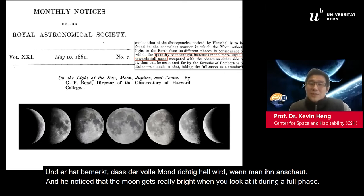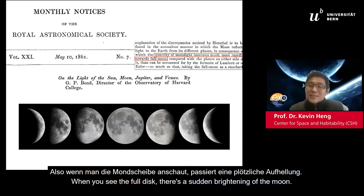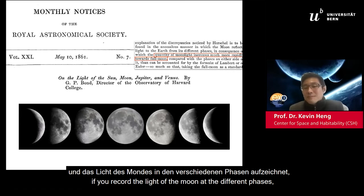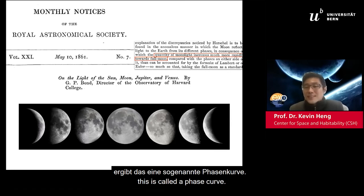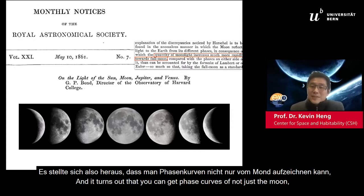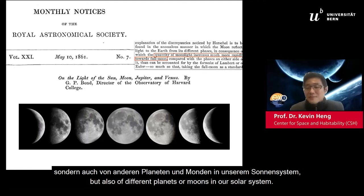He noticed that the moon gets really bright when you look at it at the full phase. When you see the whole disk of the moon, there's a sudden brightening. If you record the light of the moon at the different phases, this is called a phase curve — a term I'll use a lot. You can get phase curves of not just the moon, but of different planets and other moons in our solar system.